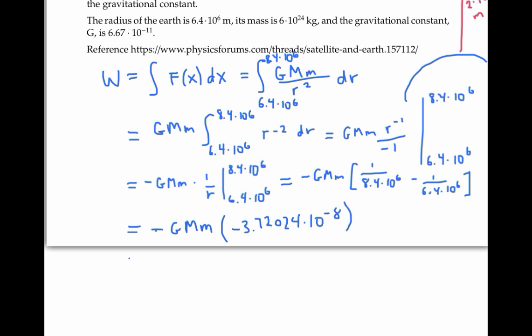Now I still need to plug in for capital G, capital M, and lowercase m. My negatives cancel here. And I have G is 6.67 times 10 to the minus 11. Capital M, the mass of the Earth, is 6 times 10 to the 24. And lowercase m, the mass of the satellite, was 1000 kilograms. Multiplying all these numbers together gives us a final answer of approximately 1.5 times 10 to the 10th joules.